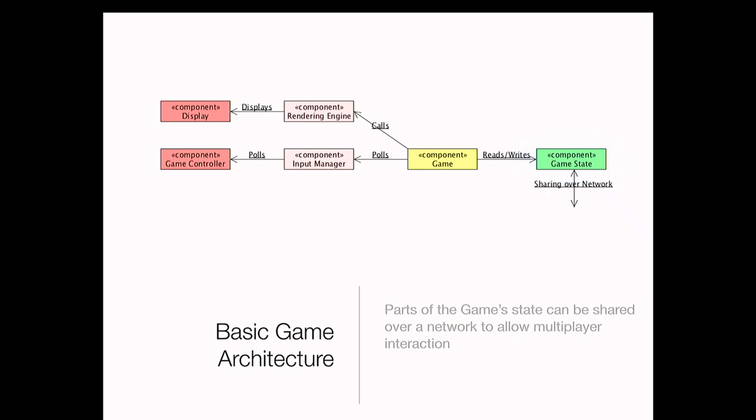In a networked game, you need to connect your game up to other players who are also playing the same game. What that means is you need to share information about the current game state. Your game component reads and writes the game state out to another component — the game state is managed by that component and might be communicated to other instances of the game over the network.